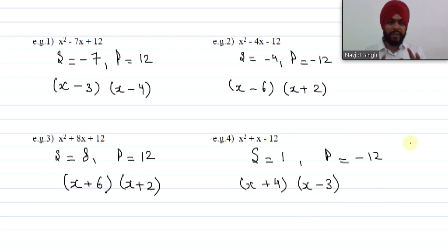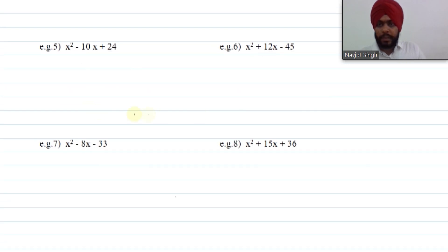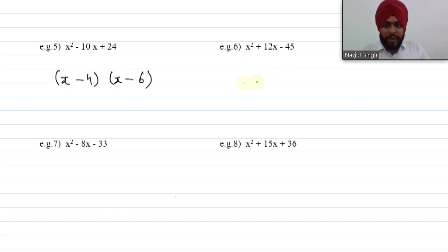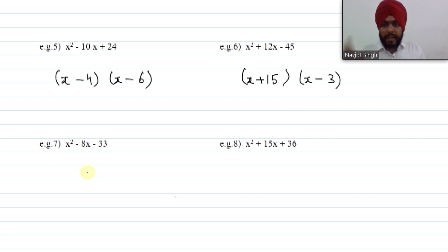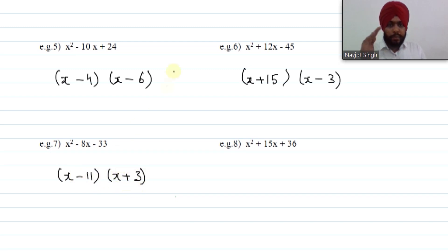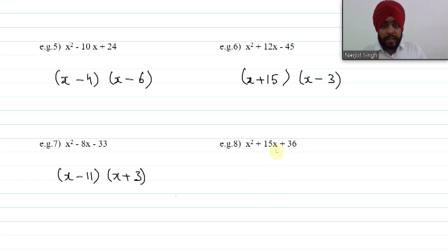Now let us do some quick factorization in 10 seconds. x² − 10x + 24: product is positive, sum is negative — directly (x − 4)(x − 6). x² + 12x − 45: sum is positive, product is negative — directly (x + 15)(x − 3). x² − 8x − 33: sum is negative, product is negative — one negative, one positive — (x − 11)(x + 3). Finally, x² + 15x + 36: sum positive, product positive — factors of 36 with sum 15 are 12 and 3 — so (x + 12)(x + 3).